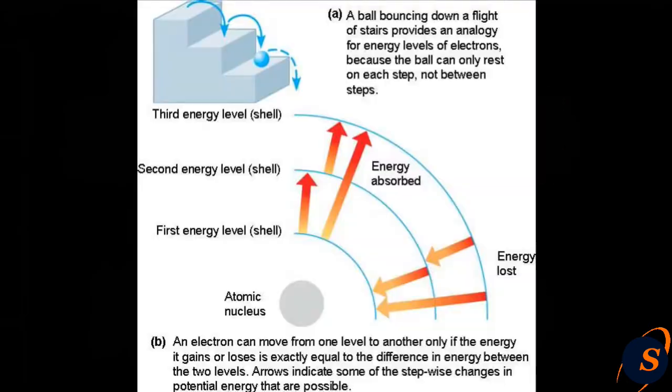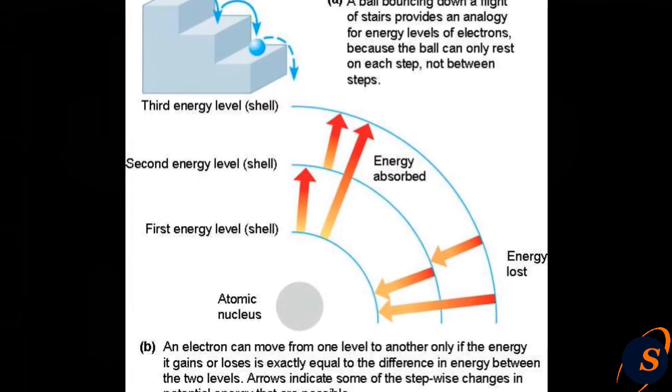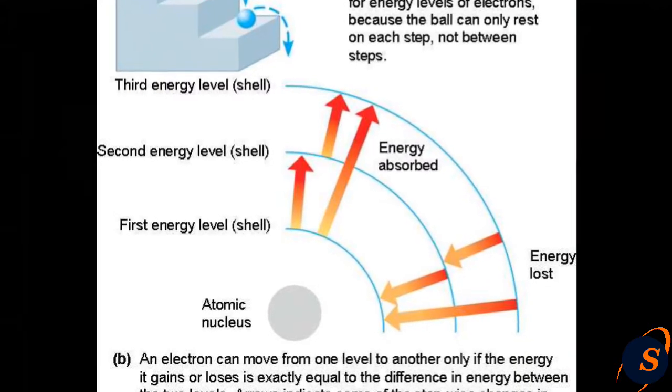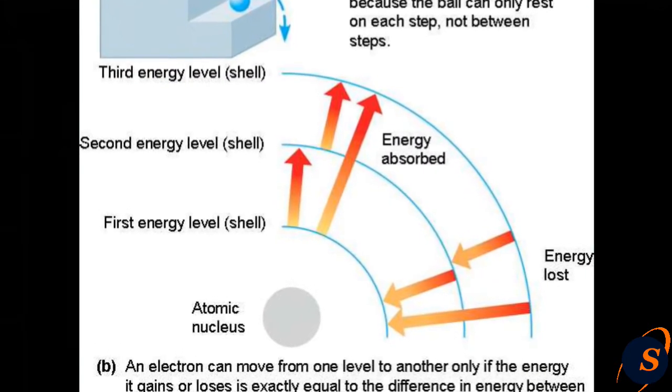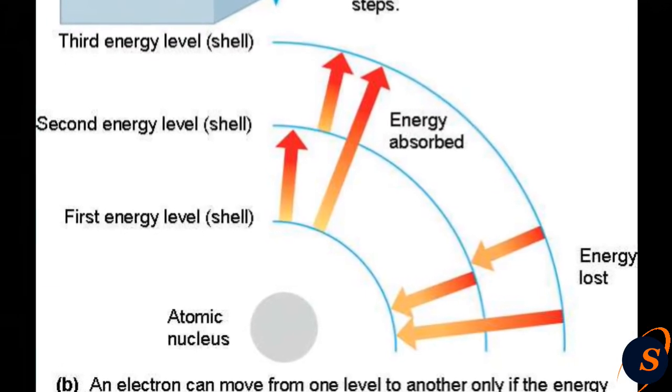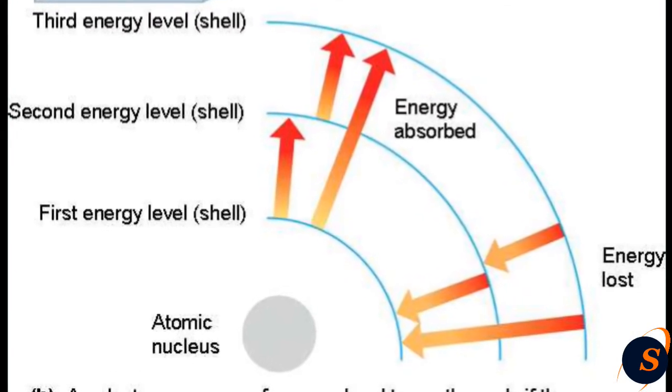So when the energy level of a certain electron in an atom is the same as the energy level of light going through it, the light is absorbed and its energy is converted into heat. Wood has electrons that are arranged in such a way that their energy is the same as the energy of visible light.